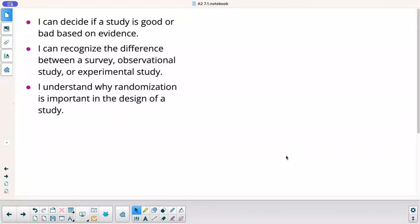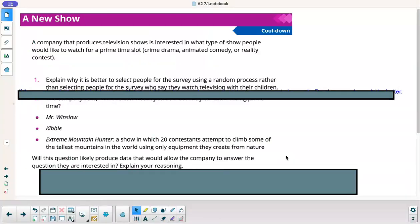All right. Back to our goals. I can decide if a study is good or bad based on evidence. I recognize the difference between a survey, observational study, or experimental study. Last one. I understand why randomization is important in the design of a study. All right. Our cool down. A company that produces television shows is interested in what type of show people would like to watch for a prime time slot. So, we've got three choices here, three categories. Crime drama, animated comedy, or reality contest.